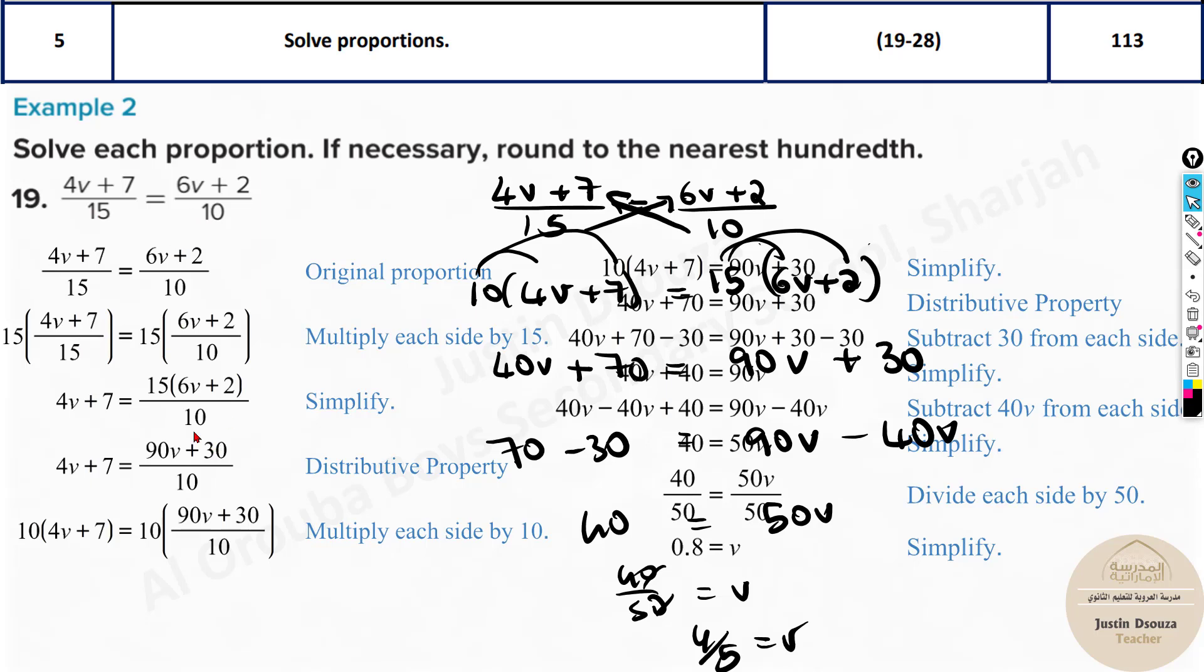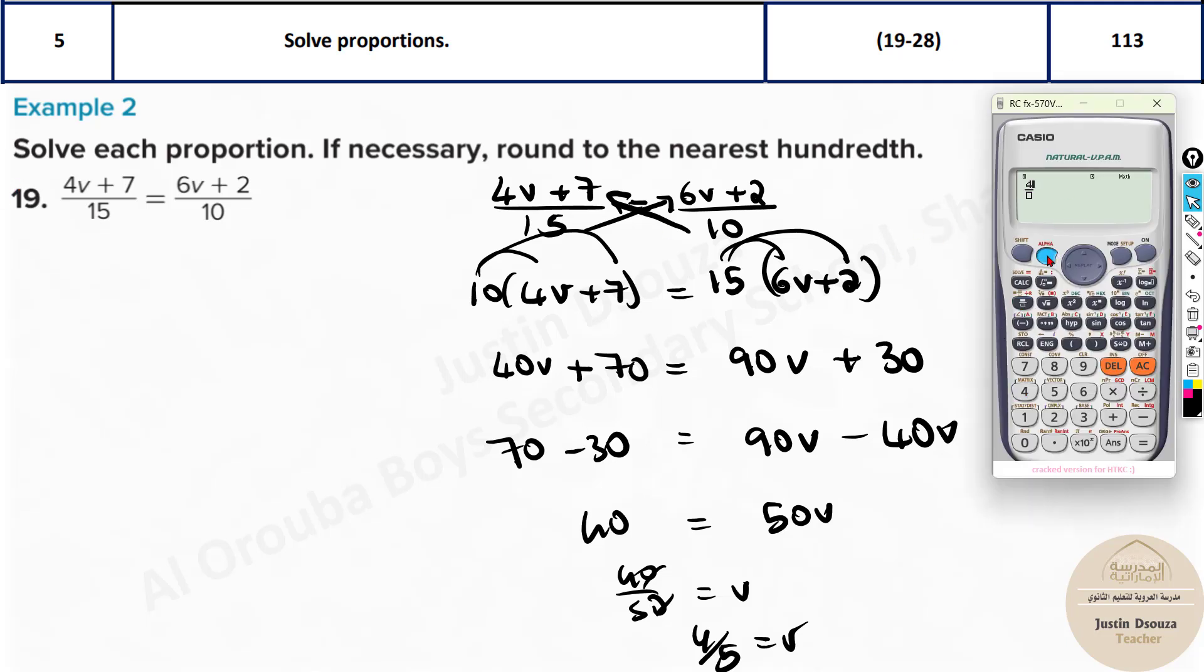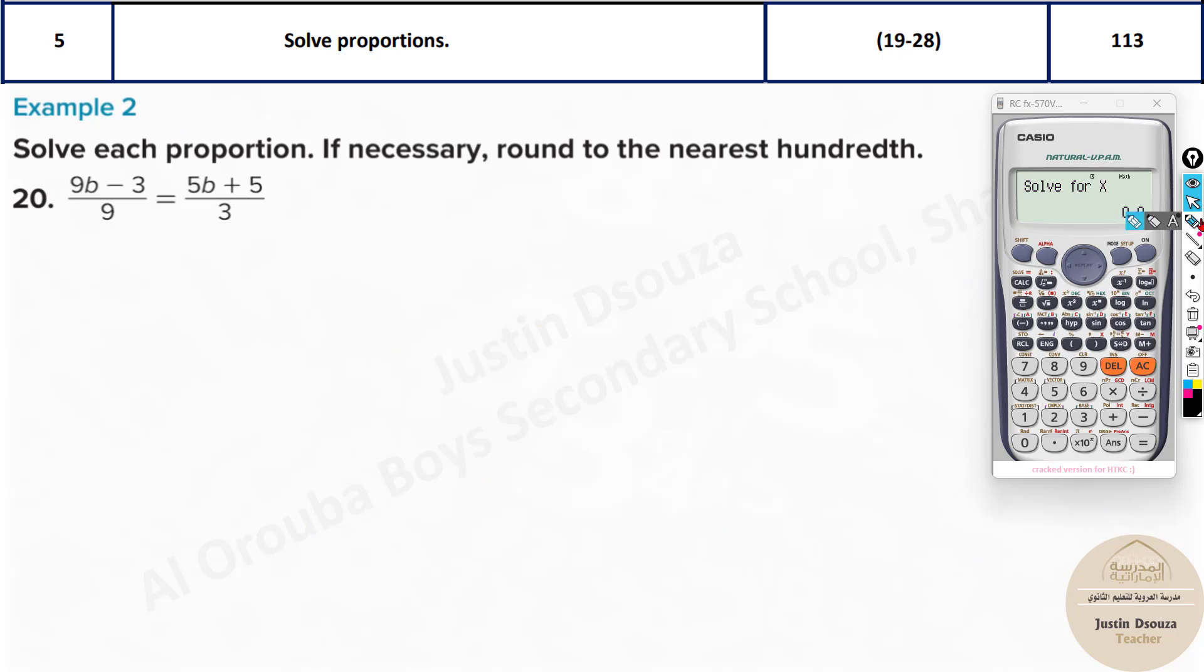They're just done it with one more number, but this method is very easy. And you can also do this in calculator. You can do it directly. Take out your calculators. You type it out as it is: 4 alpha x plus 7 divided by 15, this equals 6 alpha x plus 2 by 10. Both the variables are same. Now shift and solve, press equal to, you directly get the answer 0.8. Same answer. All these problems can be easily solved in the calculator.